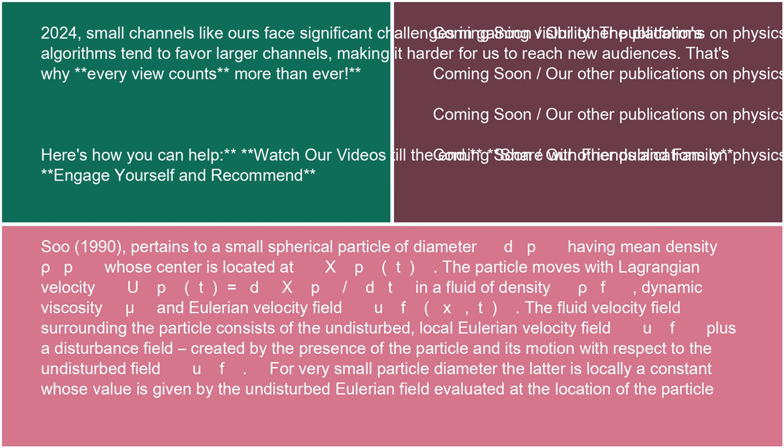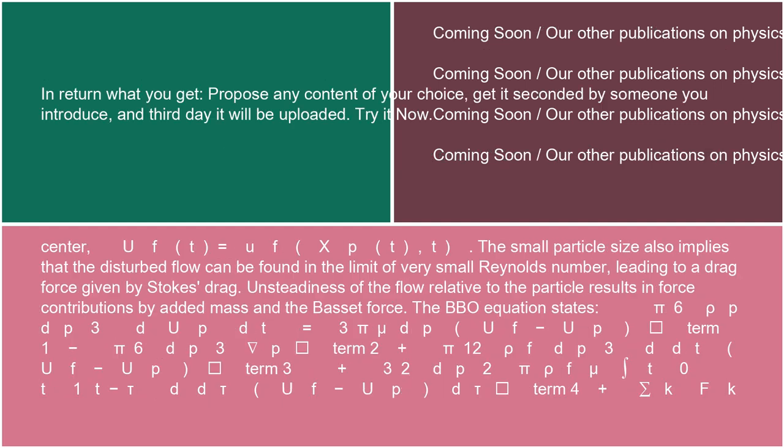The fluid velocity field surrounding the particle consists of the undisturbed local Eulerian velocity field uf, plus a disturbance field created by the presence of the particle and its motion with respect to the undisturbed field uf. For very small particle diameter, the latter is locally a constant whose value is given by the undisturbed Eulerian field evaluated at the location of the particle center: uf(t) = uf(xp(t), t). The small particle size also implies that the disturbed flow can be found in the limit of very small Reynolds number, leading to a drag force given by Stokes' drag.